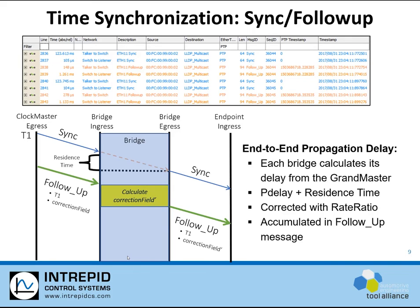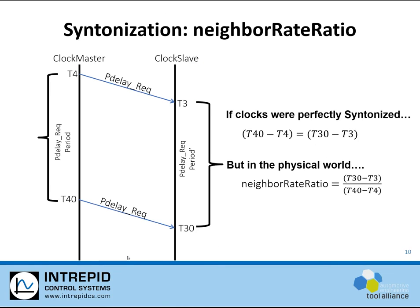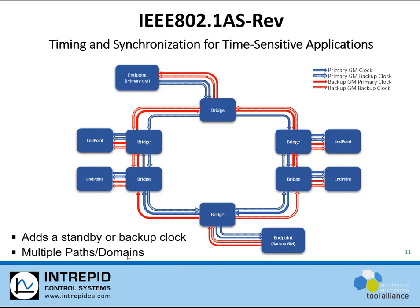Another message called the follow-up message is also transmitted by the clock master. This message contains a correction field. The switches involved in a network add the residence time that they've calculated to this correction field and send this out their egress ports to the endpoints on the network. Also contained in the follow-up message is the grandmaster's clock value, and each endpoint can use this value plus the correction field to accurately know the exact value of the grandmaster clock when the message is received. Using the PDelay request message, a node or port on a switch can calculate its neighbor rate ratio — that is, the ratio of its clock tick rate to the rate of the master that it is connected to.